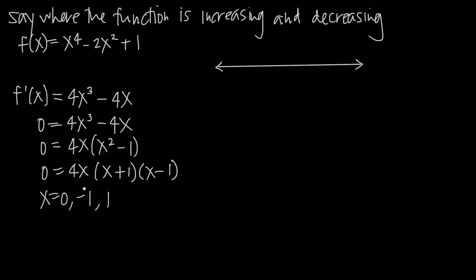We plot -1, 0, and 1 on the number line, which breaks it into four intervals. We need to use the first derivative test to test each interval to see how the function behaves — whether it's increasing or decreasing — on each one. To do that, we take a point in each interval.